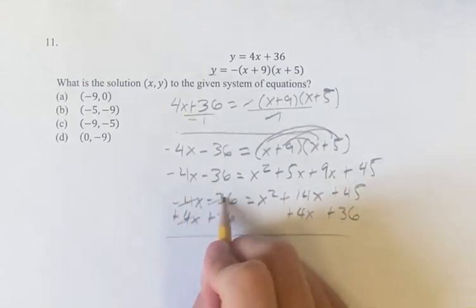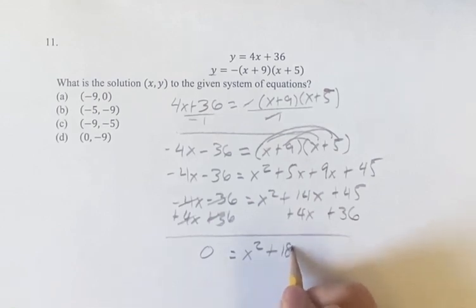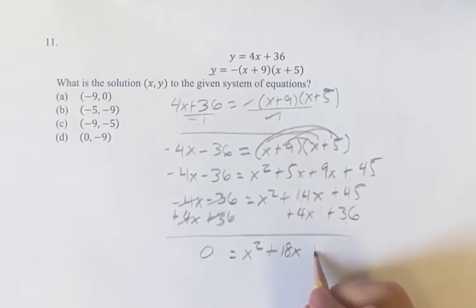...turn this side, which would have a nice zero, is equal to x squared plus 18x plus 45 plus 36 is 81.